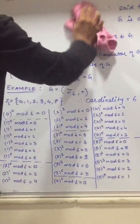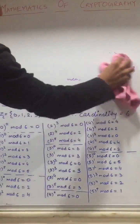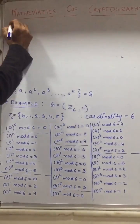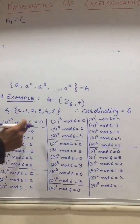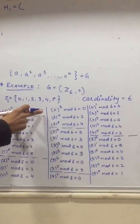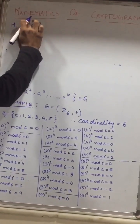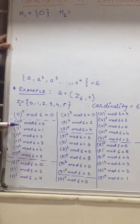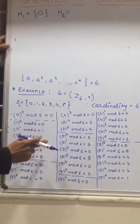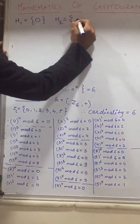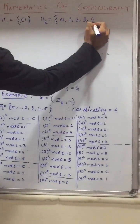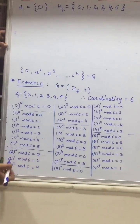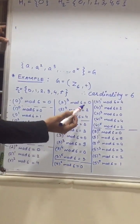I will write all the elements of Z6. H1 would be equal to {0}, because it is coming from 0. H2, generated from 1: the elements generated are 0, 1, 2, 3, 4, and 5. So H2 is equal to {0, 1, 2, 3, 4, 5}. H3 is the elements generated from 2, which are 0, 2, and 4 only. So H3 is equal to {0, 2, 4}.